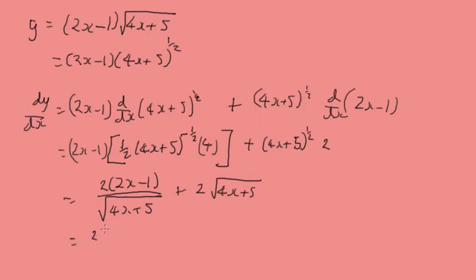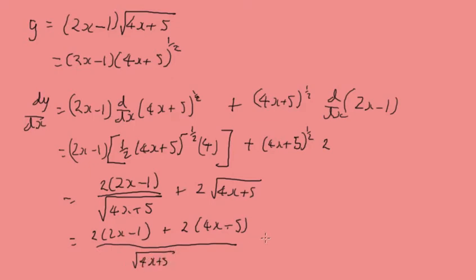We get 2(2x minus 1) plus 2(4x plus 5), all over (4x plus 5) to the power of a half. Expanding gives 4x minus 2 plus 8x plus 10, and combining terms that simplifies to (12x plus 8) over the square root of (4x plus 5).